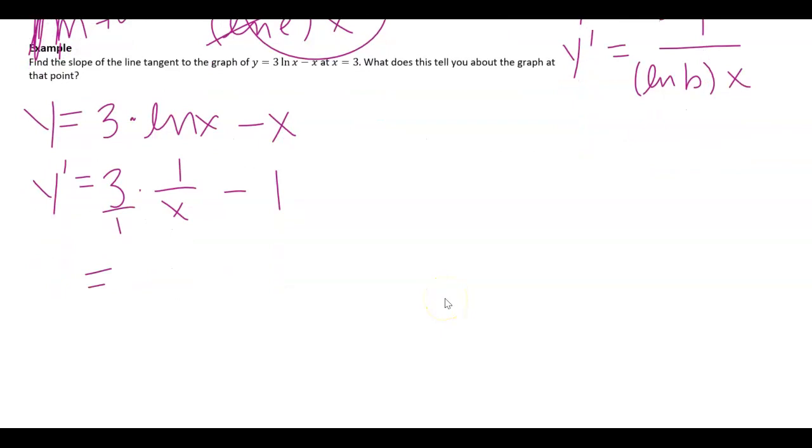I can imagine that's 3 over 1. So this is going to become 3 over x minus 1. And let's figure out what's going on. What's the slope of the tangent line when x equals 3?